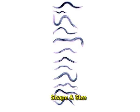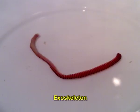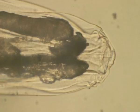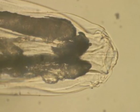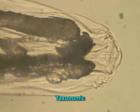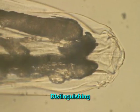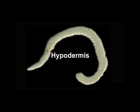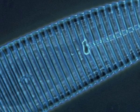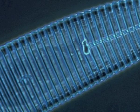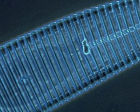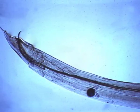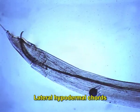The functions of the cuticle include imparting a definite shape and size to the nematode body, acting as an exoskeleton, helping in movement, and being semi-permeable — thus regulating permeability. It also provides important taxonomic characters for identification and distinguishing between different nematode species. The hypodermis, underneath the cuticle, is a thin layer of tissue responsible for secreting the cuticle. The cells and cell nuclei of this layer are located in the lateral hypodermal cords, which extrude into the pseudocoelom.